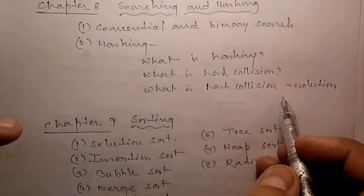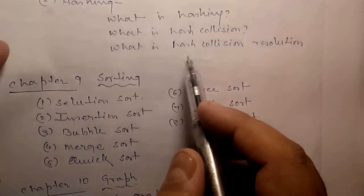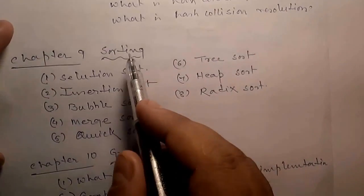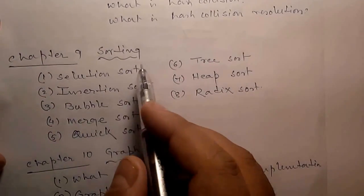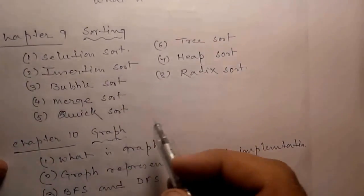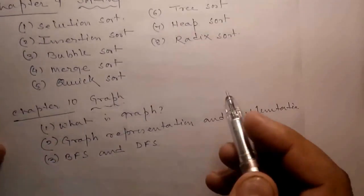We will discuss hash collision resolutions. In Chapter 9, sorting: different sorting algorithms including selection sort, insertion sort, bubble sort, merge sort, quick sort, tree sort, heap sort, and radix sort.